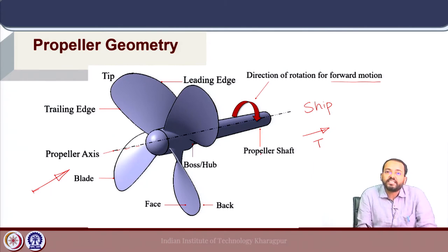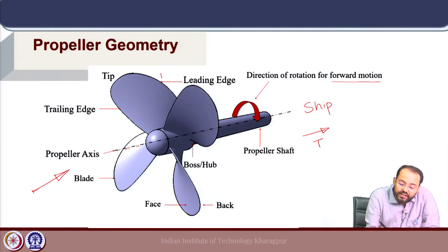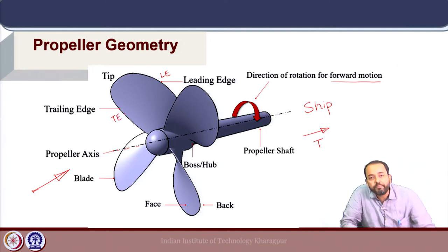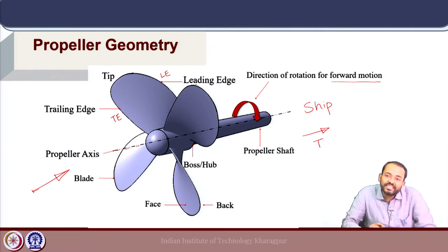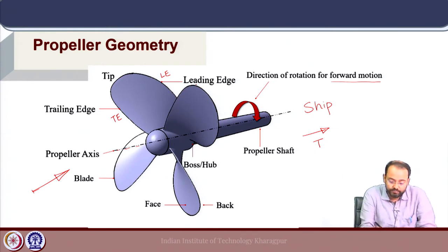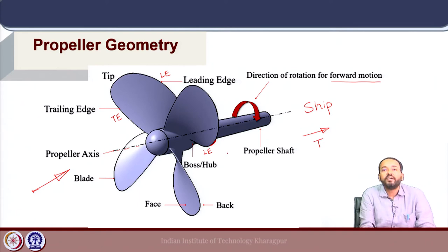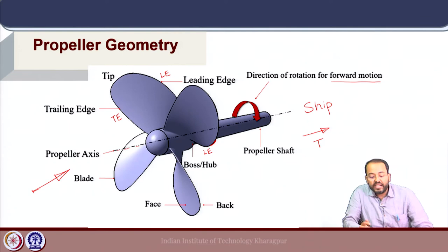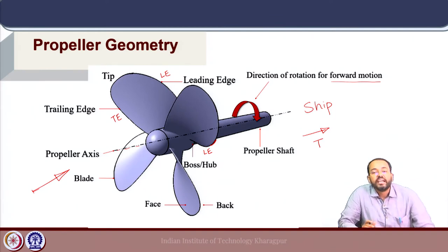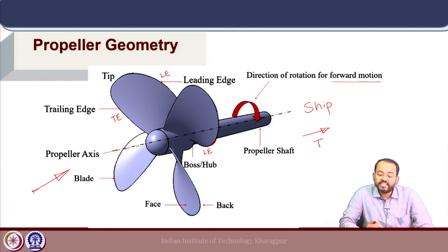We can define the propeller blade with a set of edges. The edge in one direction is called the leading edge and the other is the trailing edge. The leading edge is the edge that meets the water first as the propeller rotates. When we study the sections of the propeller, we will see that airfoil sections used for propellers have completely different leading and trailing edge designs, which defines the flow around the blade and results in the thrust force.